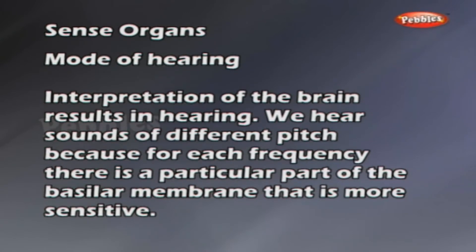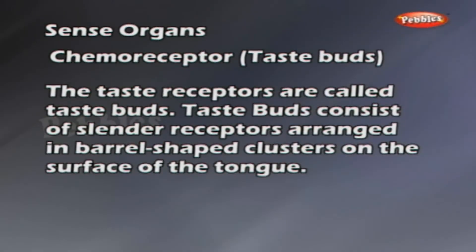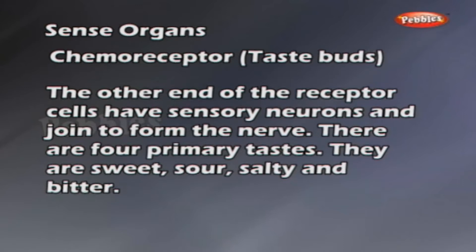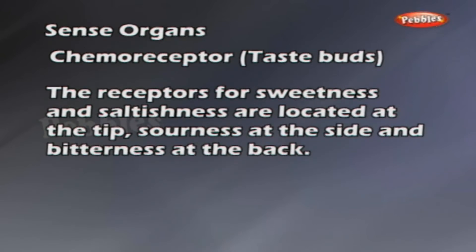Chemoreceptor - Taste Buds. The taste receptors are called taste buds. Taste buds consist of slender receptors arranged in barrel-shaped clusters on the surface of the tongue. Taste buds open into the buccal cavity by a pore. The receptor cells have fine, hair-like projections extending into the pore. The other end of the receptor cells have sensory neurons that join to form the nerve. There are four primary tastes: sweet, sour, salty, and bitter. The receptors for sweetness and saltiness are located at the tip, sourness at the side, and bitterness at the back.